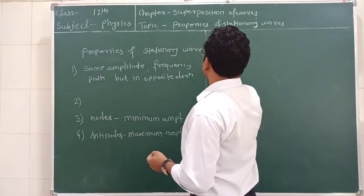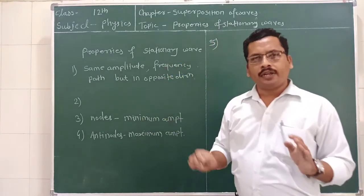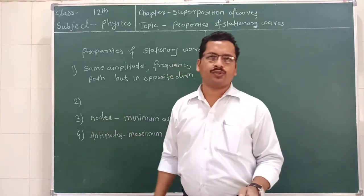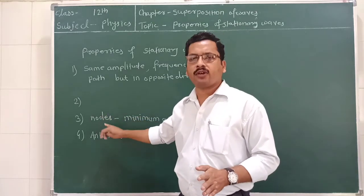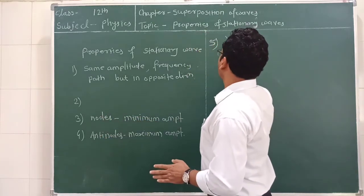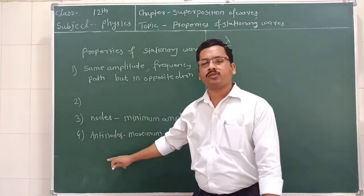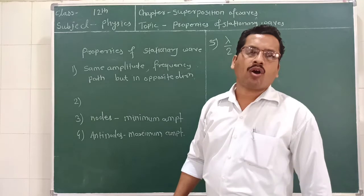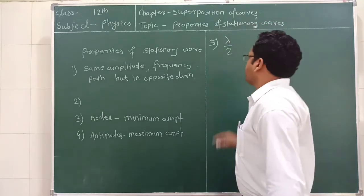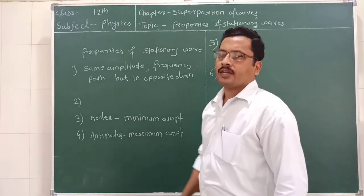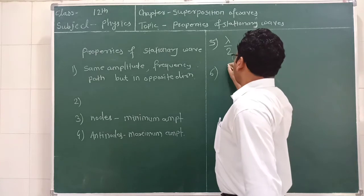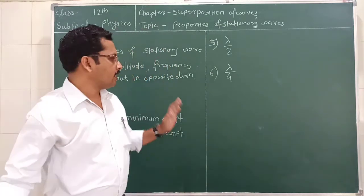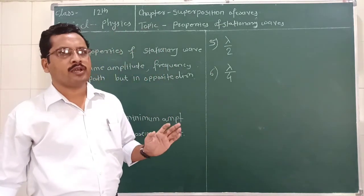The next property: the distance between two successive nodes is equal to lambda by 2, where lambda is the wavelength of the stationary wave. The sixth property says that the distance between one node and one antinode is equal to lambda by 4.